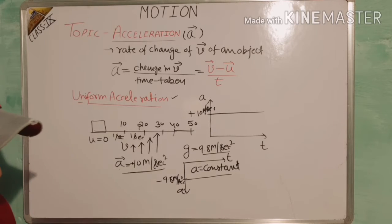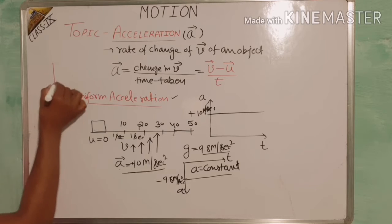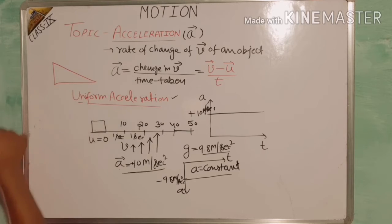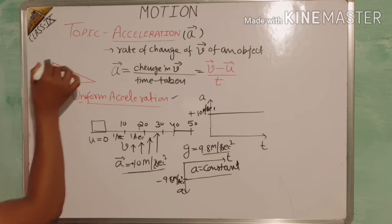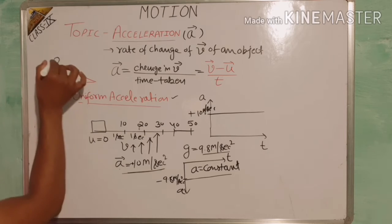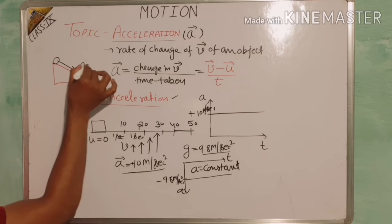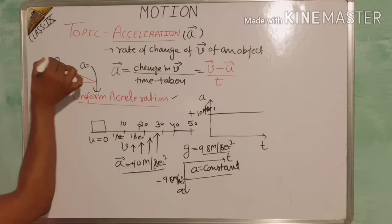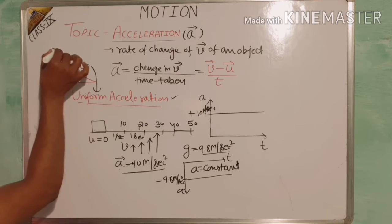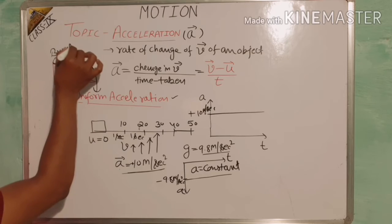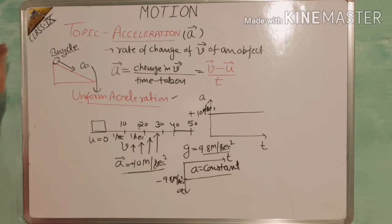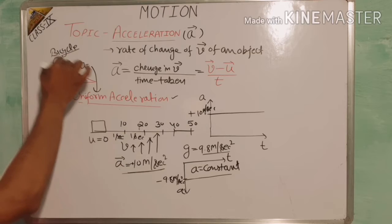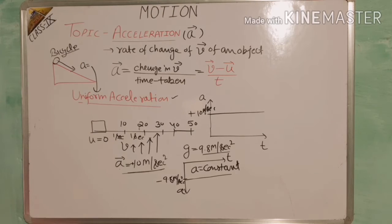An example of uniform acceleration is a ball rolling down an inclined plane. If a ball is placed on an inclined plane and moves downward, the acceleration of the ball is uniform. Similarly, a bicycle going down a slope without pedaling also moves with uniform acceleration.